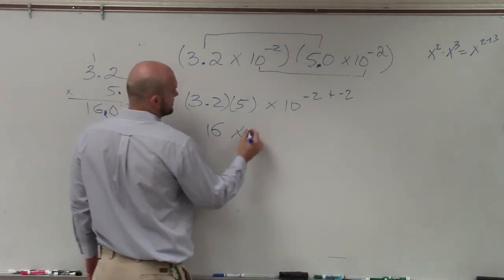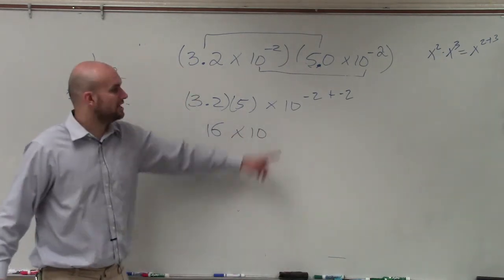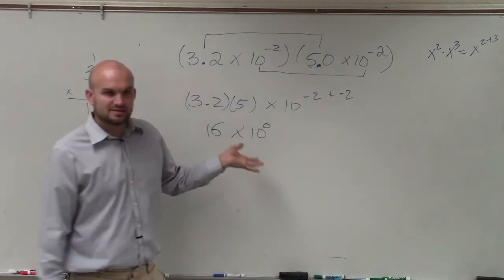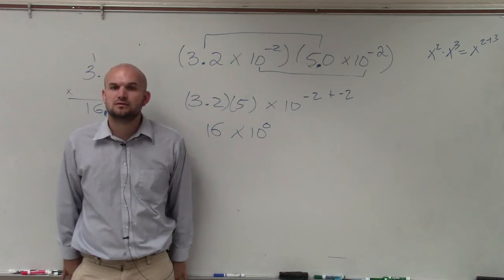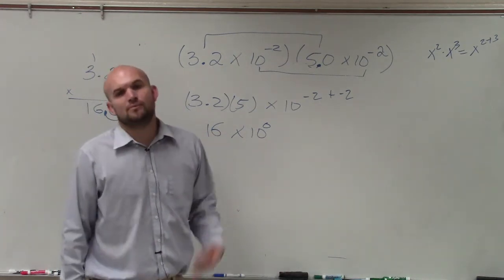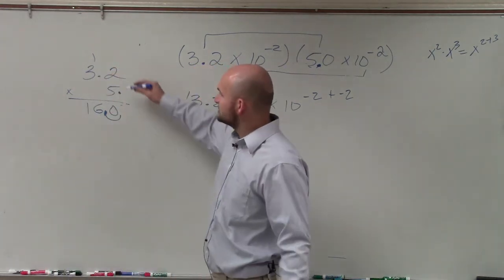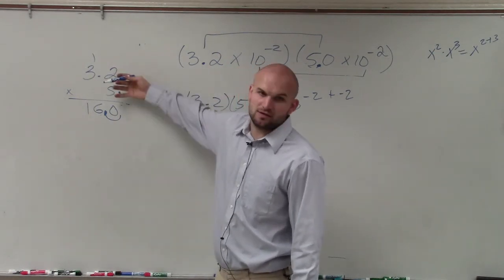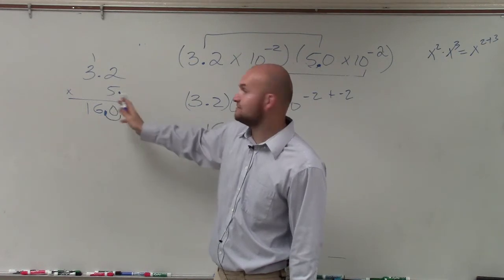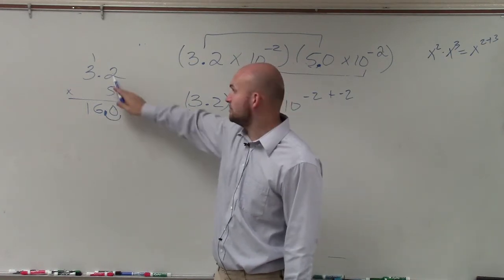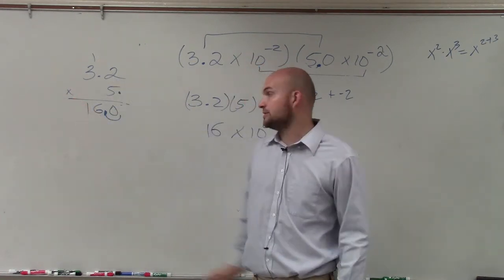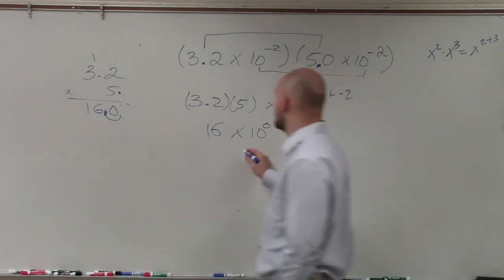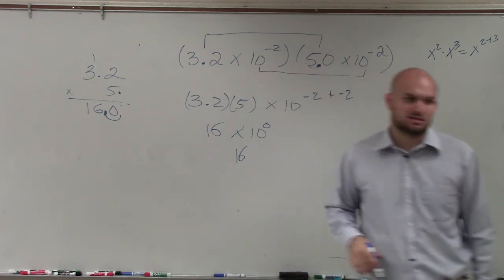So therefore, I have 16 times 10 to the 0 power. Anything raised to the 0 power — when we're doing multiplying, we always place the decimal point based on how many numbers are to the right of the decimal point. This is the number 5, so there are no numbers to the right of the decimal point — we only have one. That's why I moved it over one unit. So this would be 16 times 10 to the 0, but 10 to the 0 we don't need to write, so that would just be 16.